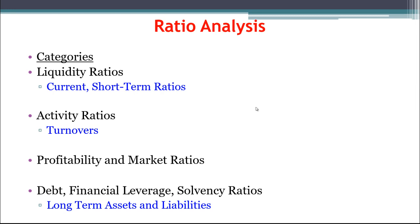The categories of the different types of ratios we're going to be calculating are liquidity ratios, which are current short-term ratios generally dealing with current assets and current liabilities, but they also have a few other things that come into play. Activity ratios, which deal with the various turnovers and days sales type entries — we'll see what that means in a bit.